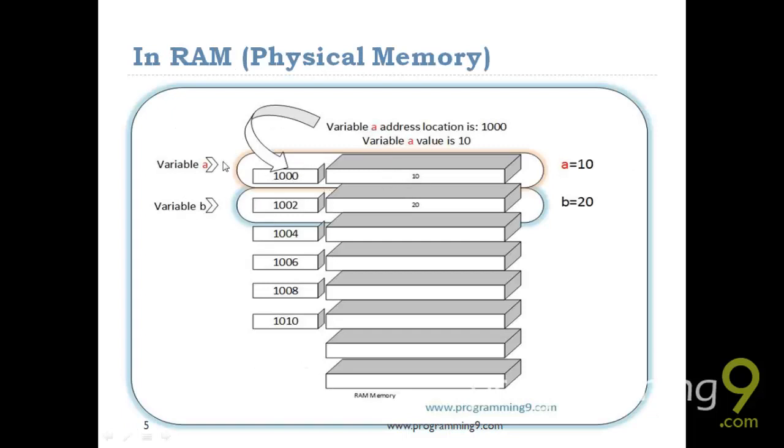If you see clearly, variable a completely has the thousand address location, and the location where we store this integer value - this is the physical memory location and the address pointing to that physical memory address location. I am combinedly calling this as variable a. Simply, variable a address location is thousand, variable a value is 10. Similarly variable b, it completely takes this part of memory, the address location and the address. So finally, a equal to 10 and b equal to 20.